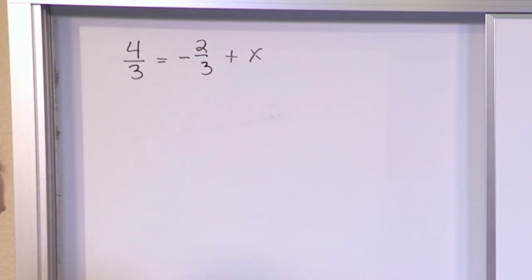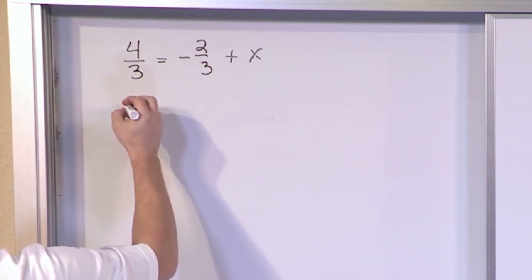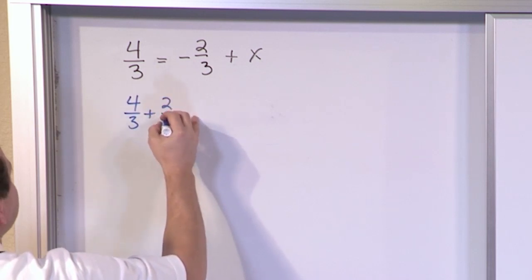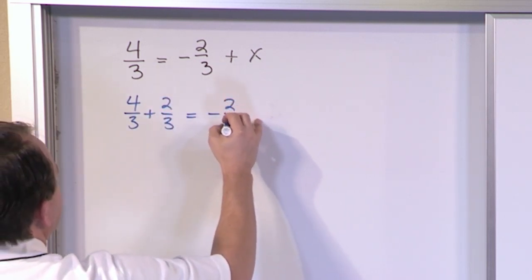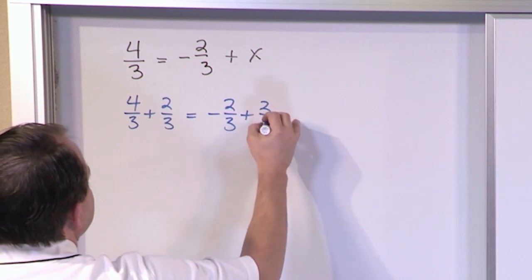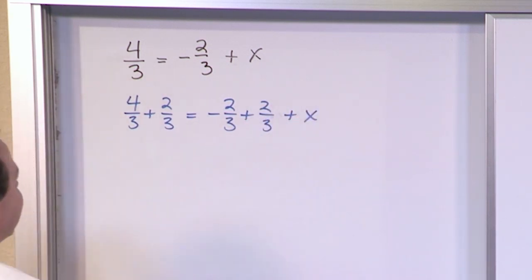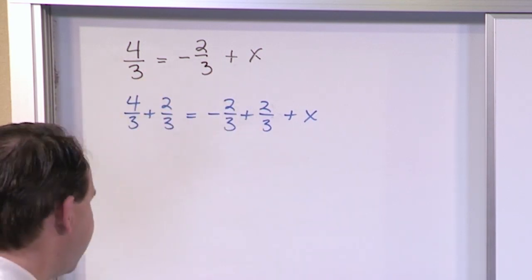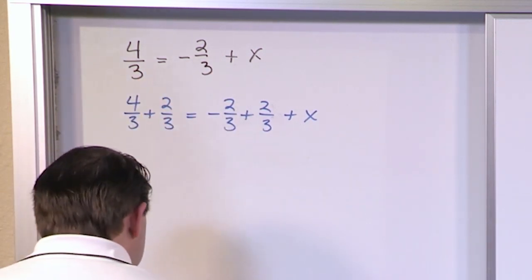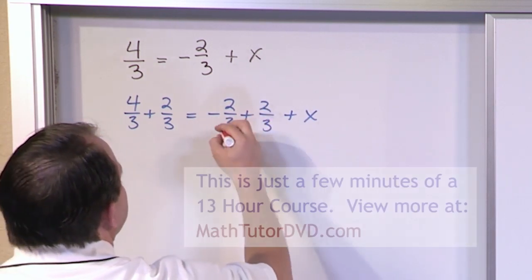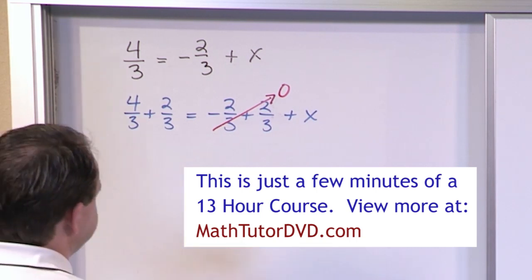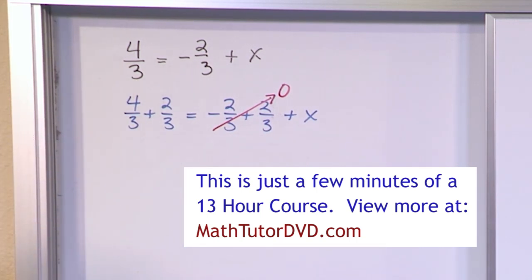So even though this problem looks more complicated, it's not. You're applying the same thing. What you want to do is you want to add 2 thirds to both sides. So you have 4 thirds on the left. You need to add 2 thirds. On the right, you have negative 2 thirds. And we're adding 2 thirds to that. Of course, we have our plus x. The only difference between this and this is I've added 2 thirds to both sides. And the reason I've added 2 thirds to both sides is because negative 2 thirds plus positive 2 thirds is 0. I'm trying to get x by itself. Okay? I'm trying to get x by itself.